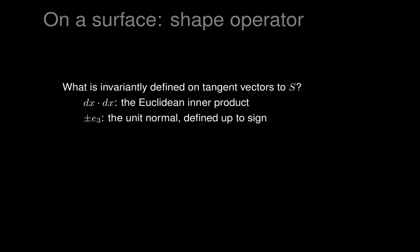The frame bundle is a bit abstract, but what about the surface itself? The first thing that's obviously defined on the tangent vectors of a surface is the Euclidean inner product, because the tangent plane sits inside the tangent spaces of Euclidean space and inherits the Euclidean product, which we can write as dx dot dx. It also has a unit normal vector E3, and that unit normal vector is uniquely defined up to sign.